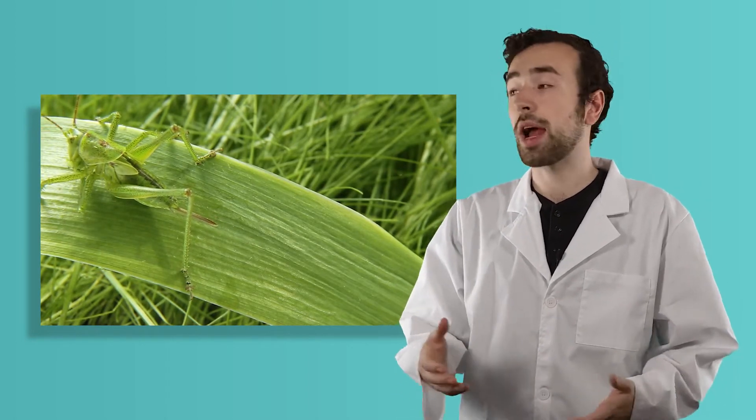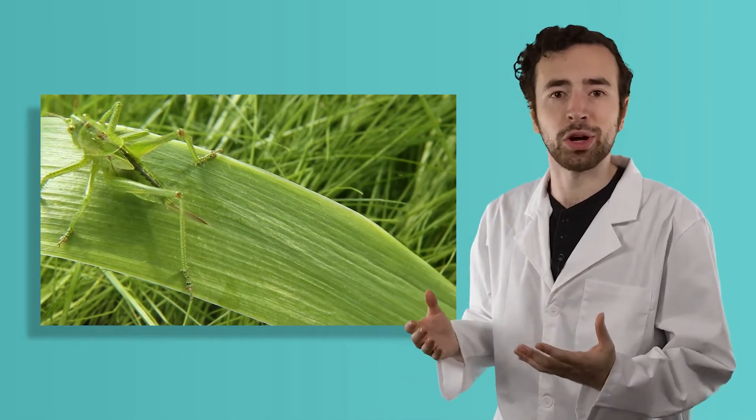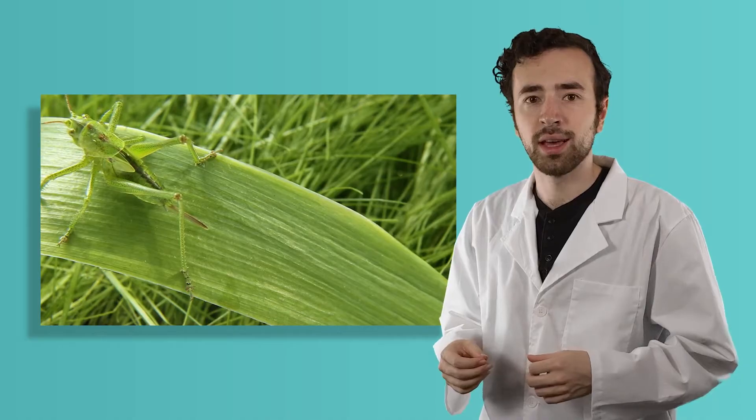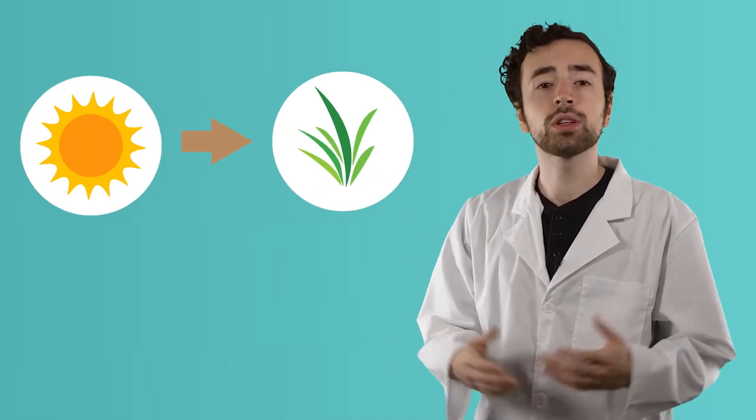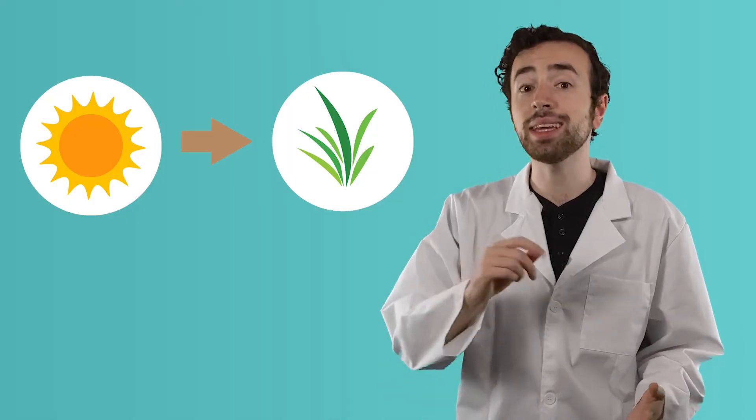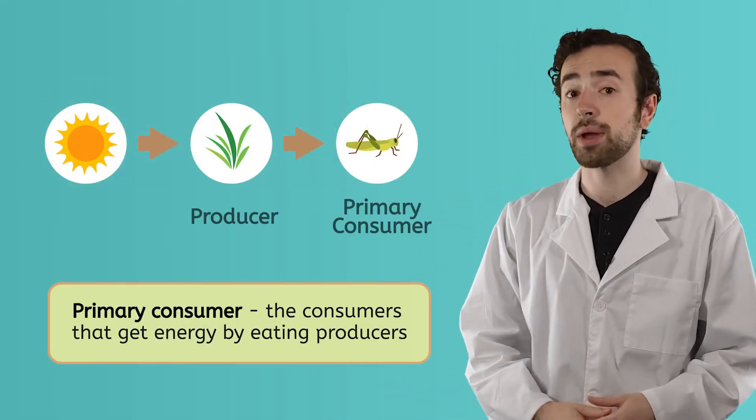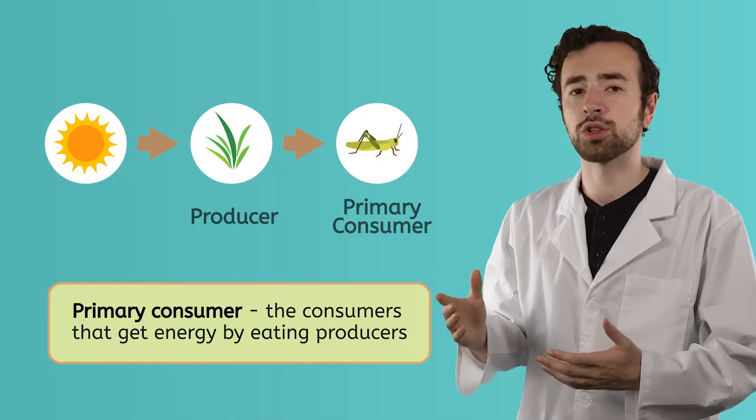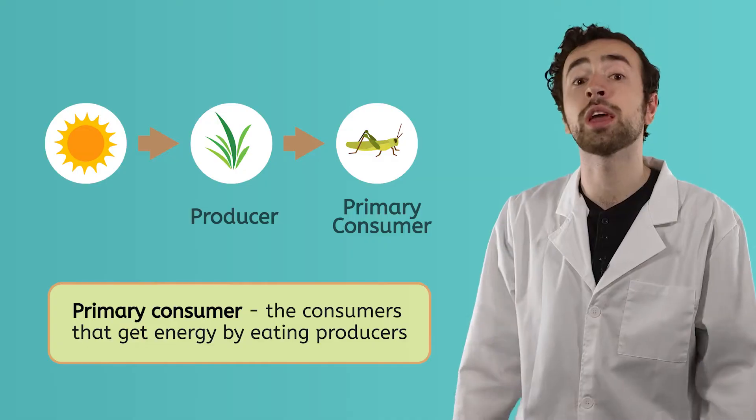For example, grass produces energy through photosynthesis. When a grasshopper comes along and eats the grass, the energy from the grass passes to the grasshopper. The consumers that get energy by eating producers are called primary consumers. Primary means first, so these are just the first of many consumers creating the flow of energy through a food chain.